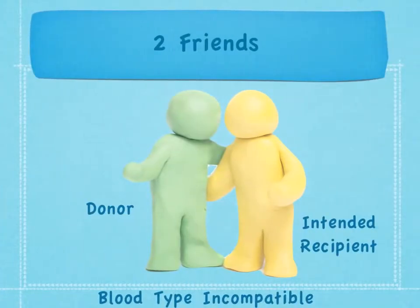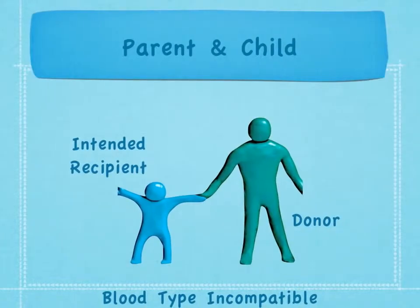Here is one example of patients who may enter kidney paired donation programs. Two friends come to a transplant program; one friend hopes to serve as a living donor for the second friend, however the two friends are found to be blood type incompatible. In another example, a parent wishes to give a kidney to their young child, however the parent is blood type incompatible with their child as well.